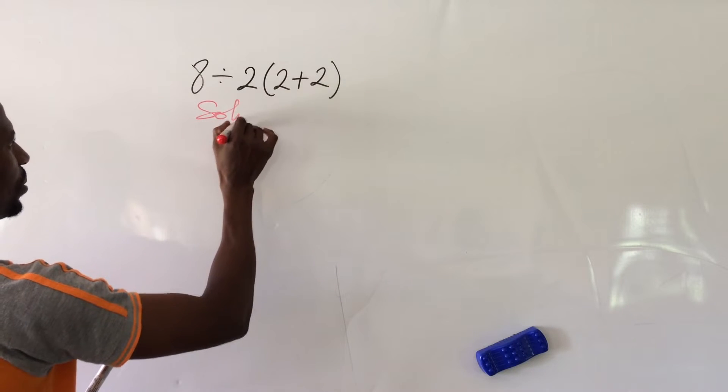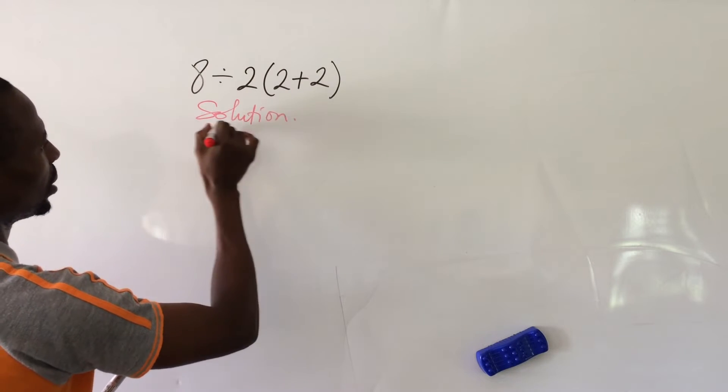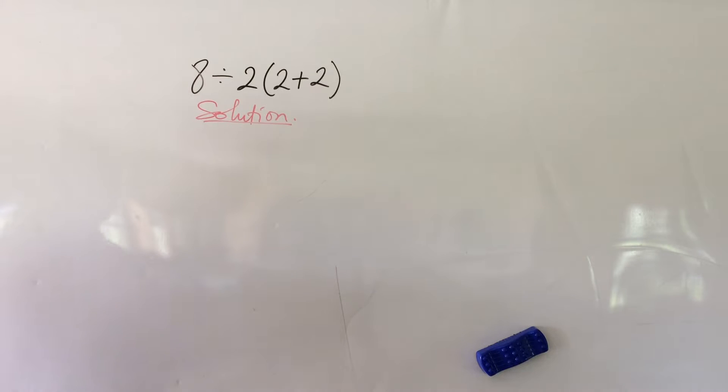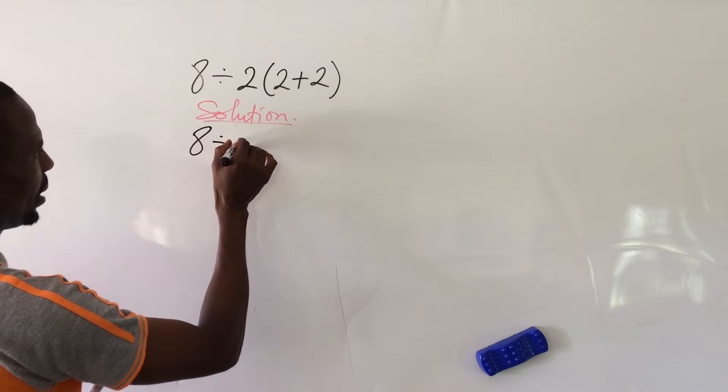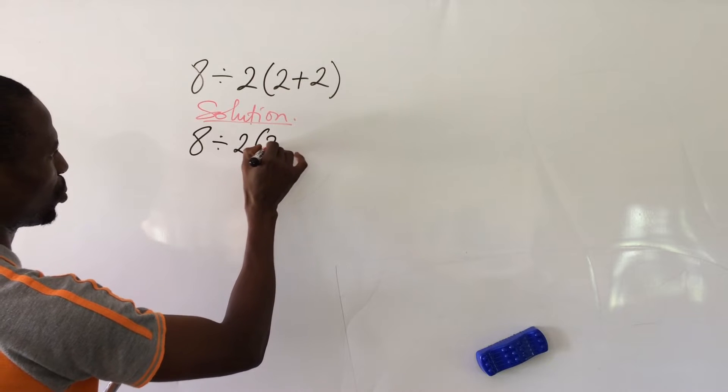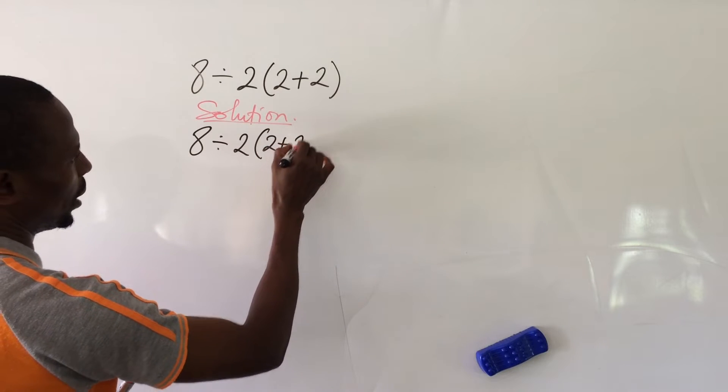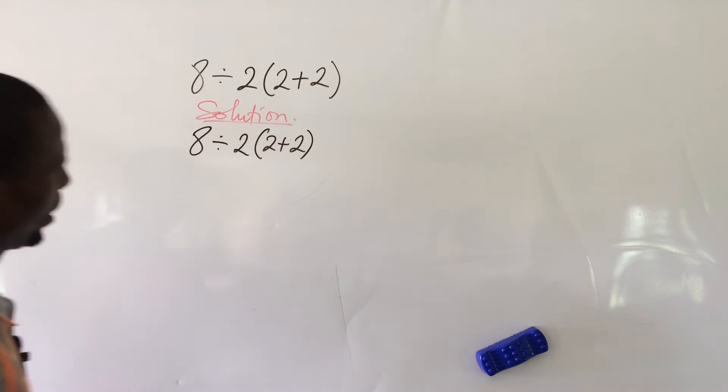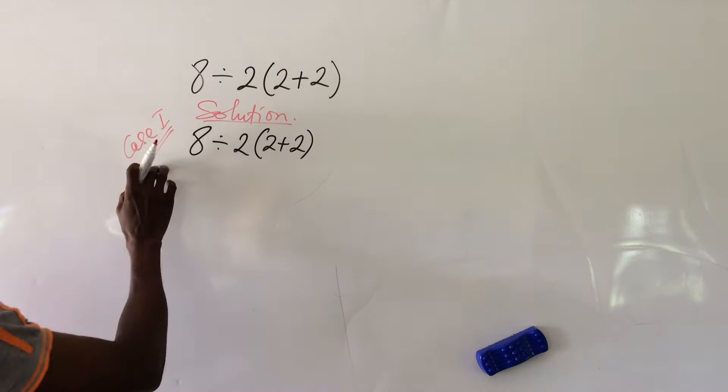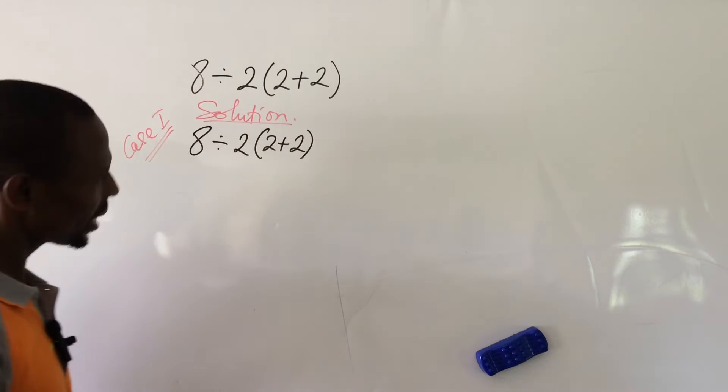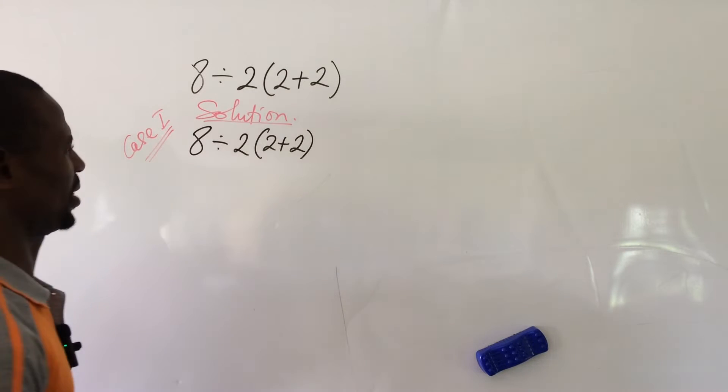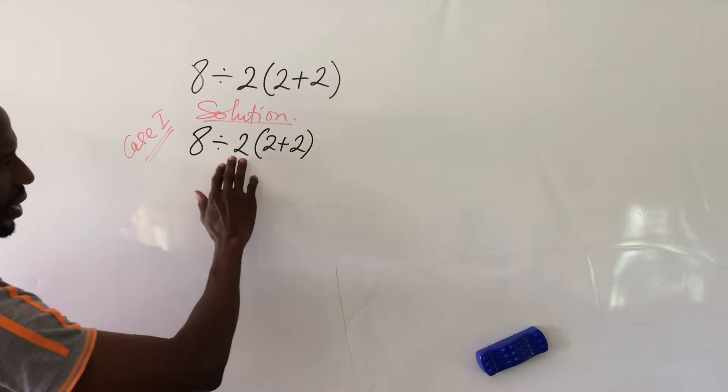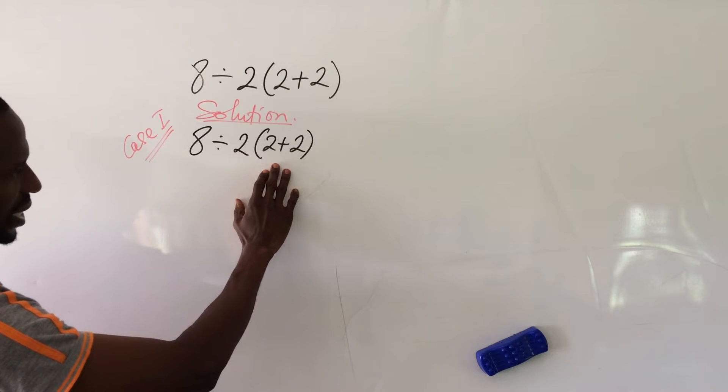Now from here we have solution. Let's put down the question. We have 8 divided by 2 into 2 plus 2. On this ground, let's take Case 1. Now under Case 1, we look at this question critically. If we look at it critically, here we are going to apply BODMAS.